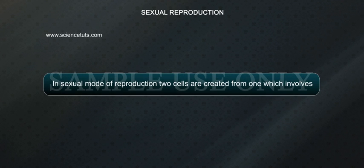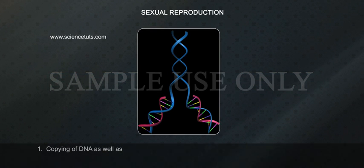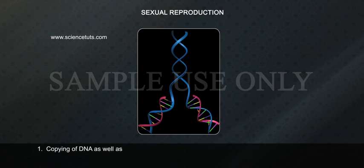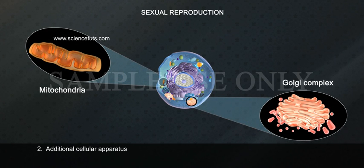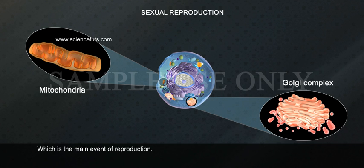In sexual mode of reproduction, two cells are created from one, which involves: 1. Copying of DNA, as well as 2. Additional cellular apparatus — which is the main event of reproduction.